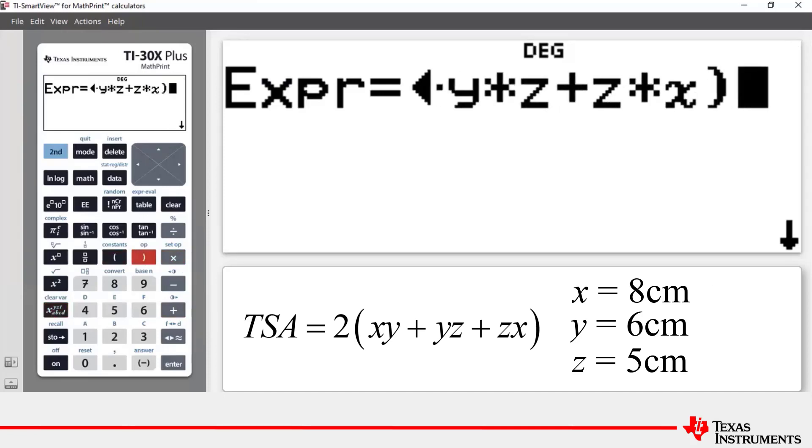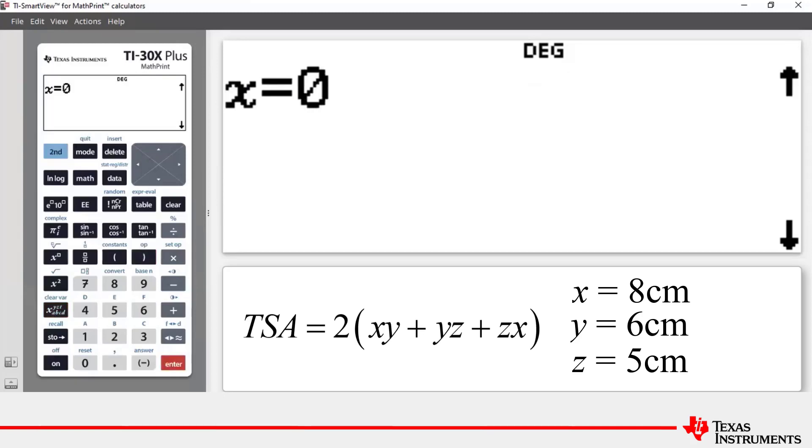Hopefully we've entered that in correctly. Then we press enter and any variables that we've entered into the formula are now given to you as prompts. In our example, x represents length and x equals 8, so we type in 8 and press enter.